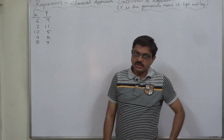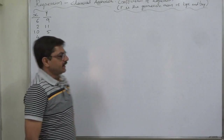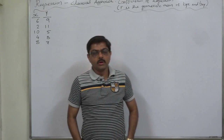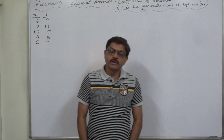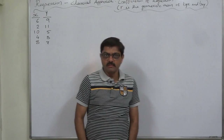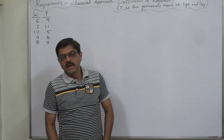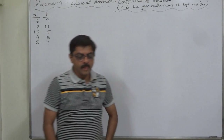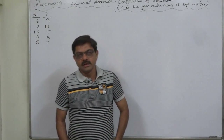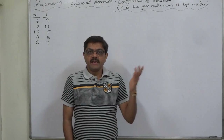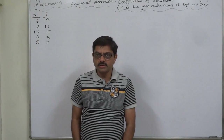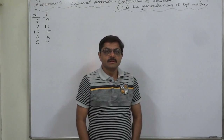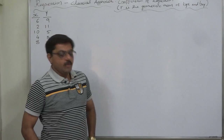Hello and welcome. This lecture covers linear regression — we have a case which we are going to solve in two parts. In the first part, we will calculate the coefficients of regression byx and bxy, and the coefficient of correlation, and then prove that the coefficient of correlation is the geometric mean of the two regression coefficients. In the second part, we will find the equations of the lines of regression and estimated values of y and x. Let us start.